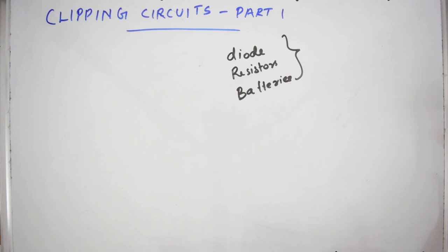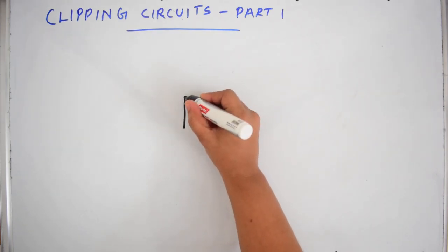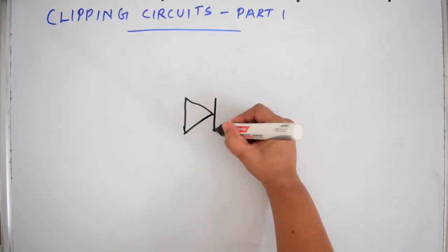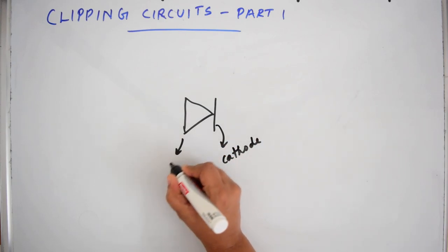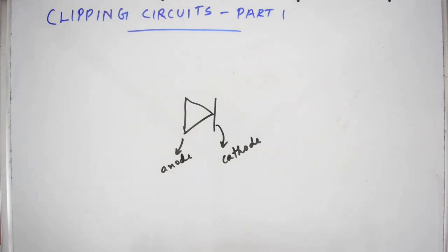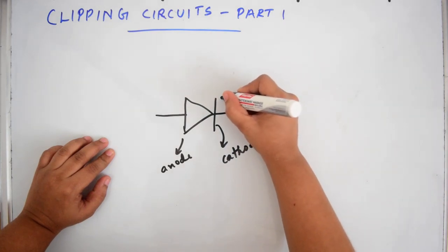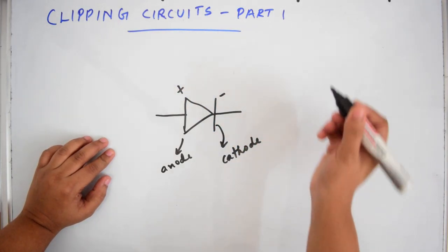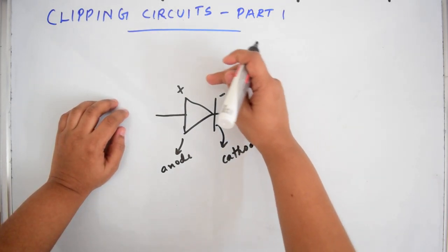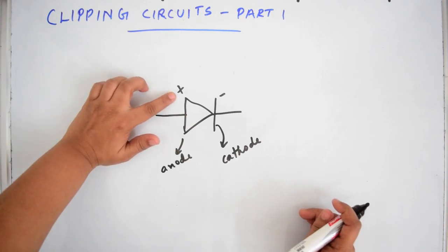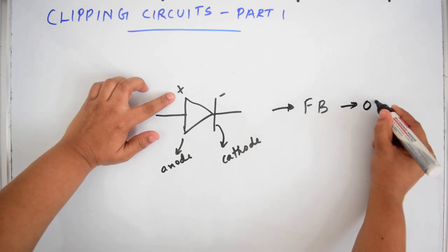Now, going into the detail, I will say something about diodes. Consider a diode — this will be the cathode and this is the anode. In a circuit, if a positive voltage comes at the anode and a negative voltage at the cathode, meaning the cathode is more negative compared to the anode, this diode will be forward biased or it will be on.